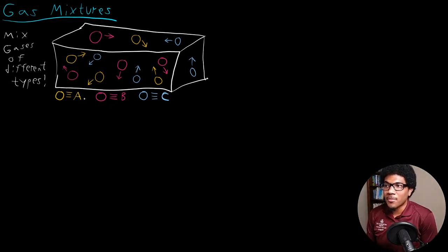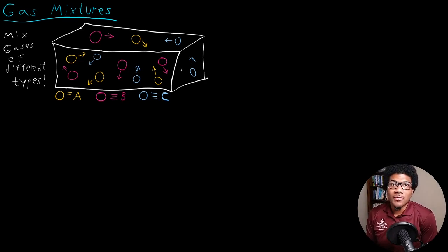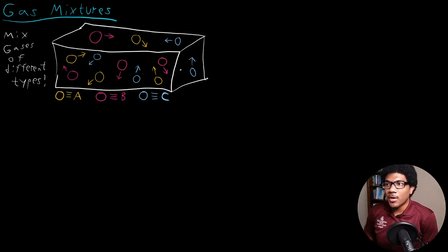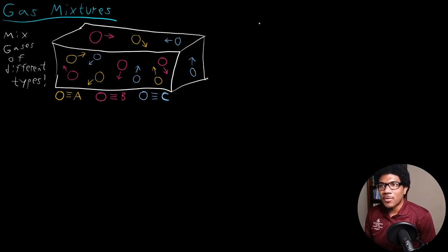Here we have three different gases labeled A, B, and C, all in a mixture in the same container, all bouncing around at the same time. How do we treat this type of scenario where each gas has its own identity and its own molecular makeup? We're going to have to treat it a little bit differently than we treat a gas with one single identity, and we use something called Dalton's Law to treat this type of scenario.